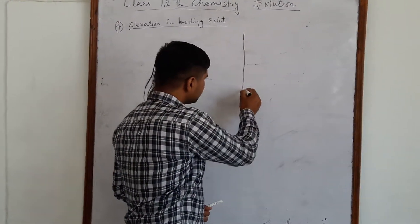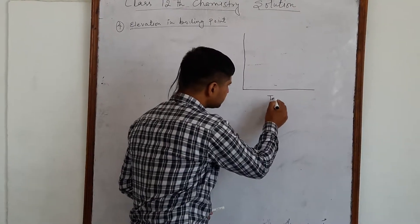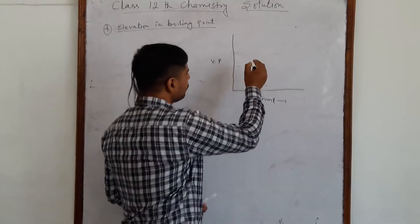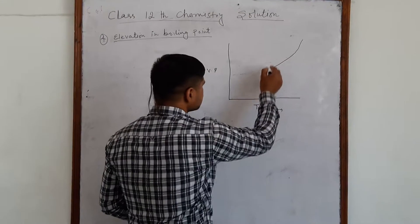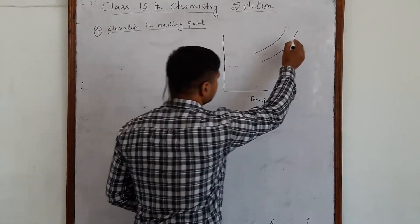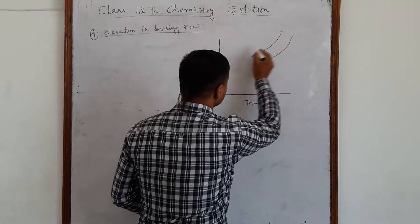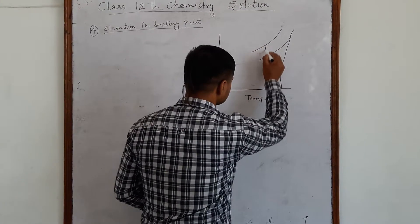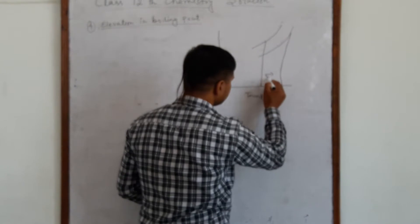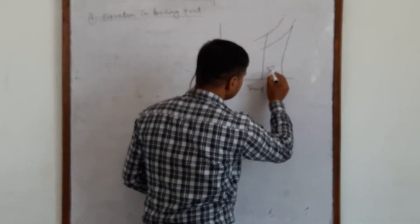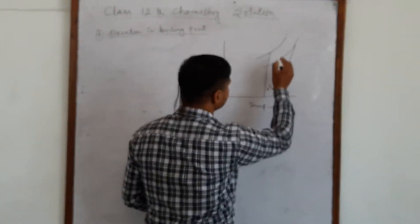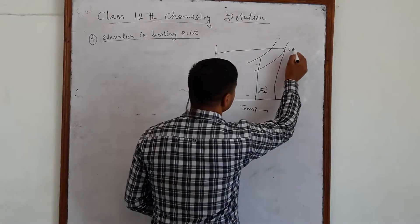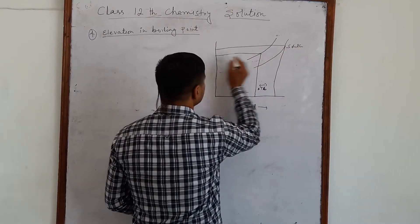Let us take an example. This graph shows temperature on one axis and vapor pressure on the other. This change is represented by delta Tb. Here, delta Tb is shown for the solution, and this is the vapor pressure for the pure solvent.